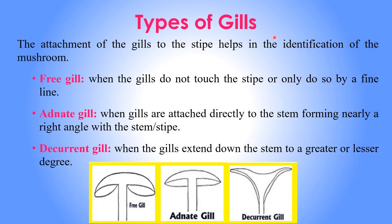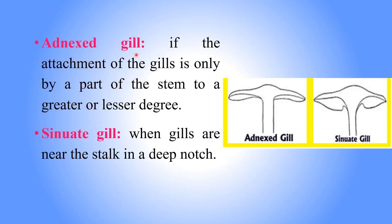The gills are divided into five types based on their attachment to the stipe — this helps identify the species of mushroom. The first type is free gills, where the gill does not touch the stipe. Adnate gills are attached directly to the stem. Decurrent gills extend down the stem. Adnexed gills attach only by part of the stem. Sinuate gills are near the strand in a deep notch.